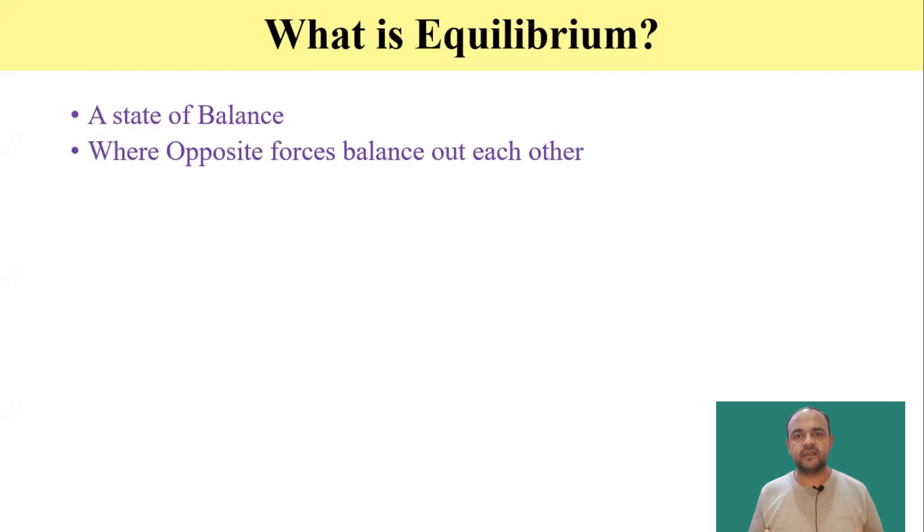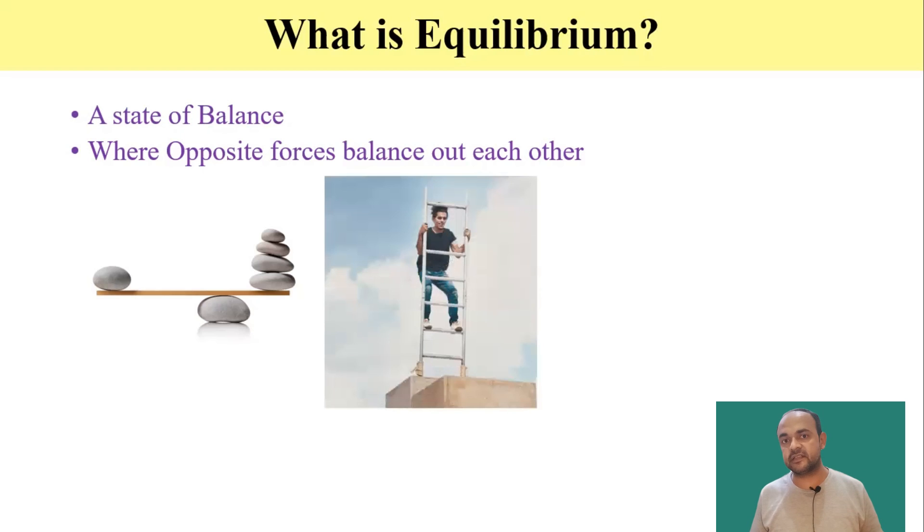That is a state in which opposite forces acting on a body are cancelling out each other. You can see in the picture, here there is some weight on the right side as well as on the left side. So this rod will be in balance if the weight on the right side and weight on the left side acting in opposite direction will balance out each other.